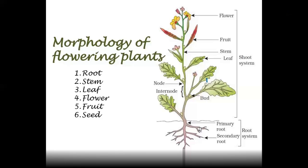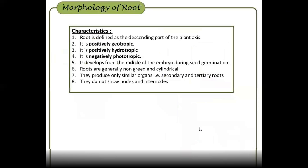Angiosperms: 'angio' means covering, and 'sperms' means seeds — so covering of the seeds. Plants with covered seeds. Plants are at the highest level of evolution, and angiosperms are at the highest level in taxonomy — the highest level from the species. They have advanced characteristic features.